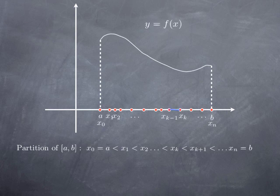Focusing on the kth subinterval — since the subintervals don't need to have equal length — I define the length of the kth subinterval as delta xk, which equals xk minus xk minus 1. I'm going to look at what I can do over this particular interval, and then do the same thing over each subinterval and sum up what we've got.